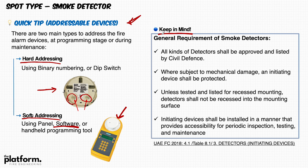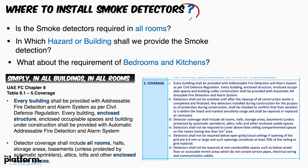Keep in mind the general requirements for smoke detectors based on the UAE Fire Life Safety Code of Practice 2018, Table 8.1. All detectors shall be approved and listed by Civil Defense. If a device is subject to mechanical damage, it shall be protected by a guard. Devices shall be mounted on the surface or ceiling; if recessed into the ceiling, they must be listed and tested for that purpose. Smoke detectors shall be installed in accessible locations for inspection, testing, and maintenance.